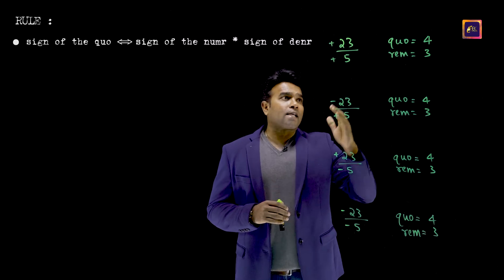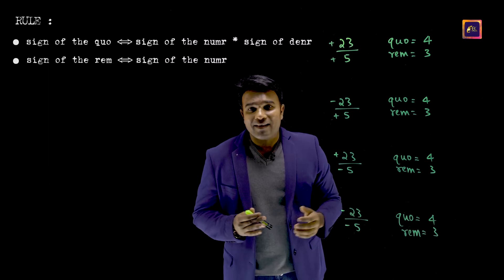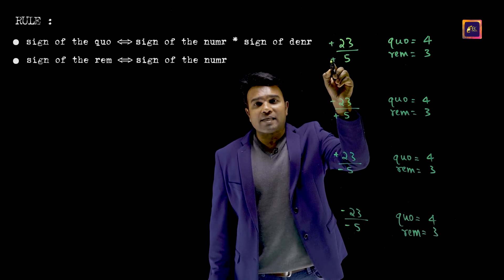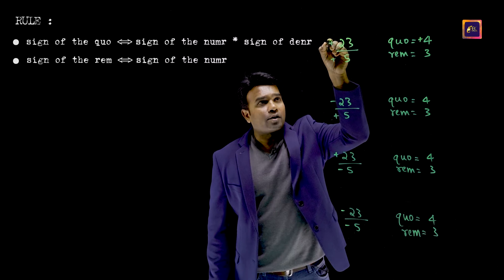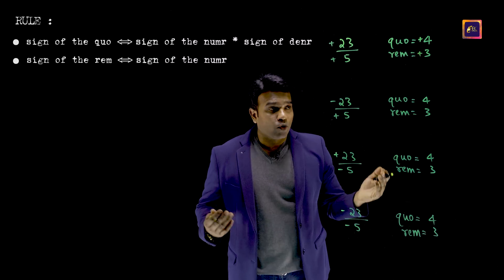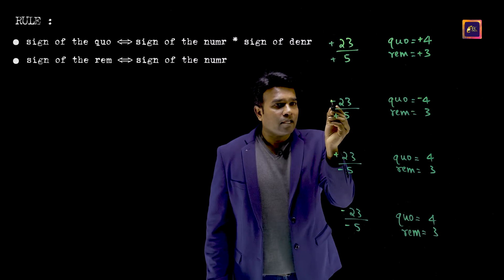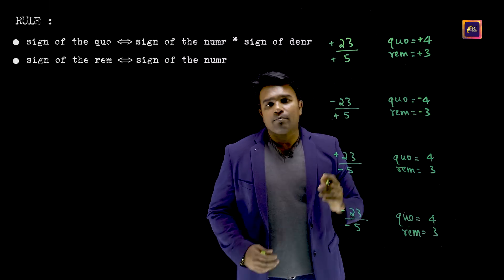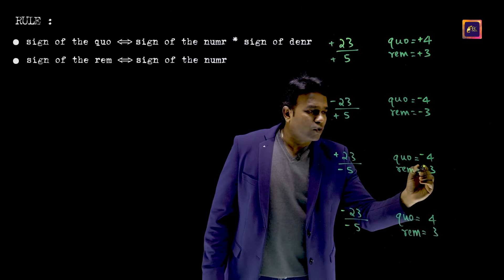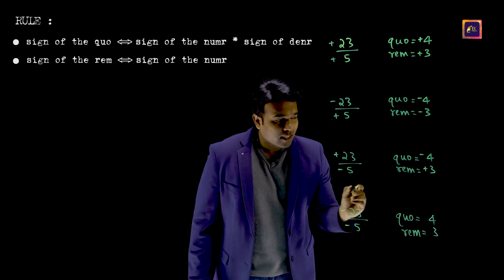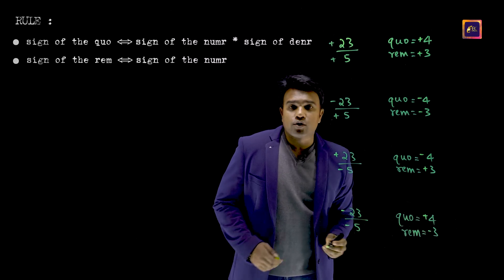The sign of the remainder would be the same as the sign of the numerator. Applying the rule: plus times plus is plus — that is the sign of the quotient — and the remainder follows the sign of the numerator, which is plus. Minus times plus is minus for the quotient, and the numerator is negative, so the remainder is also minus. Plus times minus is minus for the quotient, and the numerator is positive, so the remainder is also positive. Minus times minus is plus for the quotient, and since the numerator is negative, the remainder is also negative.